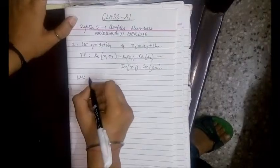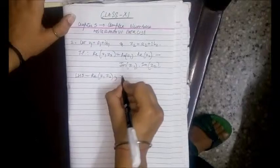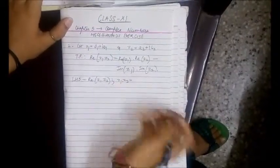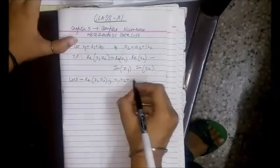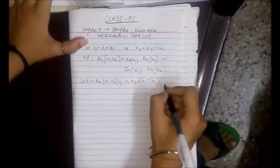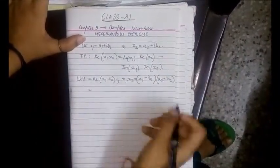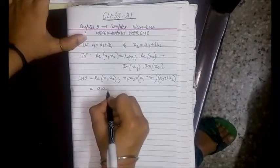LHS is the real part of Z1 into Z2. Now first calculate Z1 into Z2. Z1 is A1 plus iota B1, and Z2 is A2 plus iota B2. Now this is A1 into A2.